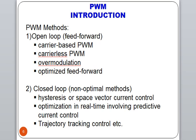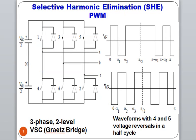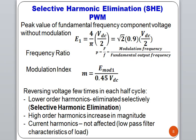First of all, we will study SHE. PWM methods can also be categorized in terms of open-loop and closed-loop methods. For the SHE-PWM technique, we are taking an example of a 3-phase 2-level VSC, which is a grades bridge. In Selective Harmonic Elimination, we reverse the voltage in each half cycle, and we reduce the harmonics in this way.